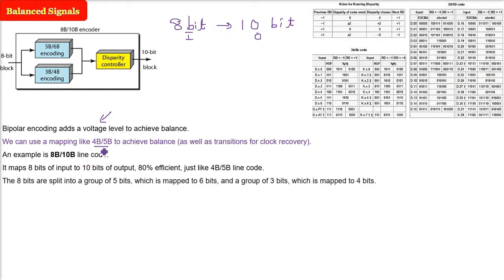The 8 bits are split into a group of 5 bits and a group of 3 bits. The first 5 bits are mapped to 6 bits and the next 3 bits are mapped to 4 bits. These 6 and 4 are then concatenated or combined.